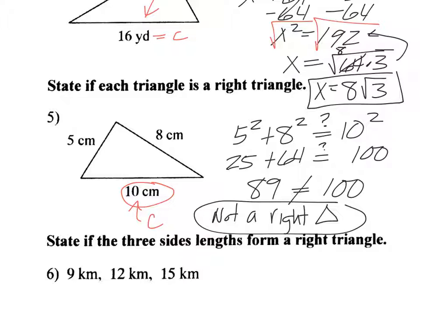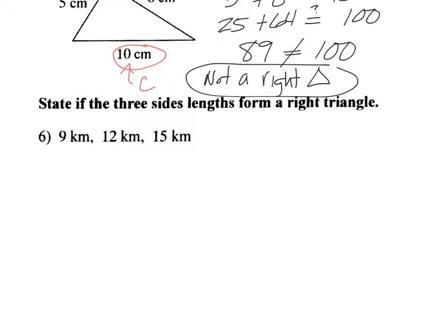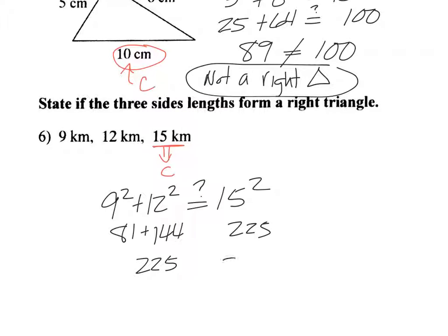All right, one more type of problem with Pythagorean Theorem here. It says state if the three side lengths form a right triangle. So again, you're doing this one basically like I just did the previous one. Remember, identify your C, so that would be your C. So you do 9 squared plus 12 squared. See if that equals 15 squared. So 81 plus 144, that would be 225. 15 squared is 225. And those are equal. So yes, a right triangle.